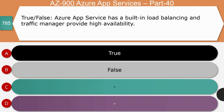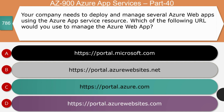Next question — true or false: Azure App Service has a built-in load balancing and traffic manager to provide high availability. The right answer is true. App Service provides load balancing capabilities which are built in internally, so there is no need for external load balancing capability.